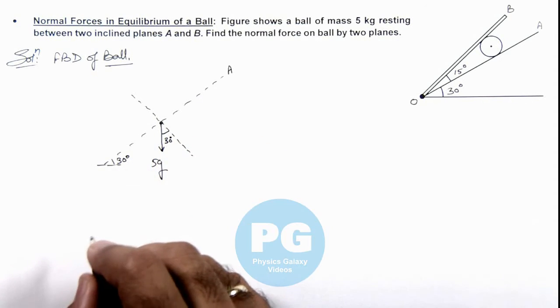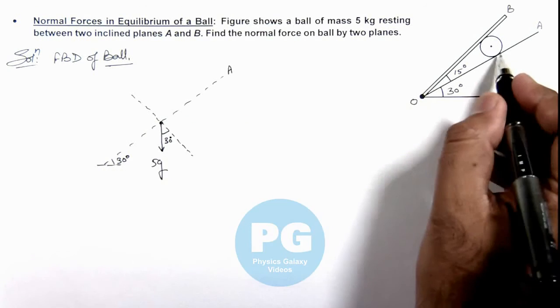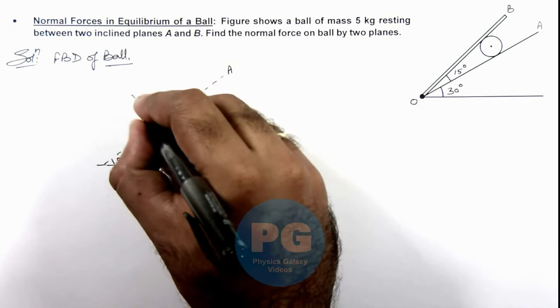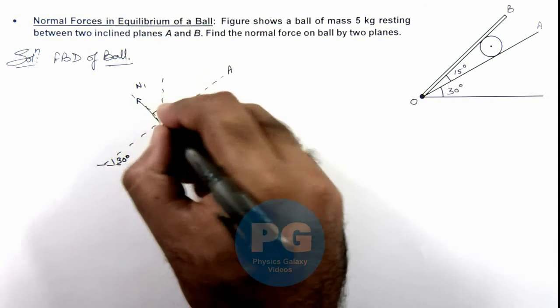Now in this situation, one normal reaction will be acting on the ball due to the plane A, which is normal to it. Say this is N₁, which is at an angle 30 degrees to the vertical.